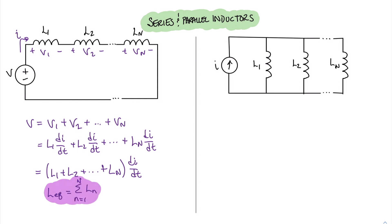Now let's turn our attention to inductors in parallel. We can recognize this is almost exactly the same math as for series capacitors. The equation for the current through an inductor related to voltage is 1/L times the integral of voltage dt, plus the initial current. So without repeating all that math, the parallel combination of inductors gives us: 1 over L_equivalent equals the sum from n=1 to N of 1 over L_n. That gives us our parallel combination equivalent for the inductors.